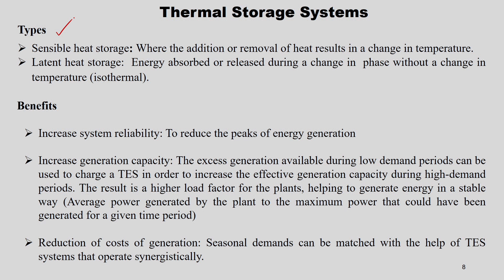In types of thermal energy storage, there are two categories: sensible heat storage and latent heat storage. In sensible heat storage, addition or removal of heat results in a change in temperature. In latent heat storage, energy is absorbed or released during a phase change without a change in temperature — it is an isothermal process. Benefits of thermal energy storage include increased system reliability, reduced generation peaks, and increased effective generation capacity during high demand periods.